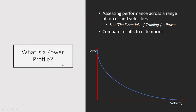So firstly, we need to understand what a power profile is. Essentially, what it's going to do is allow us to assess performance across a range of forces and velocities — basically across this entire force-velocity curve. To understand what the force-velocity curve means and how different qualities can lie on different places on it, you can see the video on this channel, 'The Essentials of Training for Power.' What we're going to do is do this power profile and then compare the results to an elite population, so we can understand where the individual athlete has their strengths and weaknesses and know what to work on.